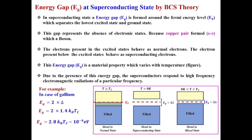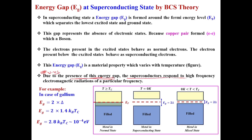The electrons present in the excited states behave as normal electrons. The electrons present below the excited states behave as superconducting electrons. The energy gap is a material property that varies with temperature. If temperature is between 0 Kelvin and Tc the gap has a certain value; decreasing the temperature further increases the gap. Due to the presence of this gap, superconductors respond to high-frequency electromagnetic radiations of a particular frequency specific to each material.